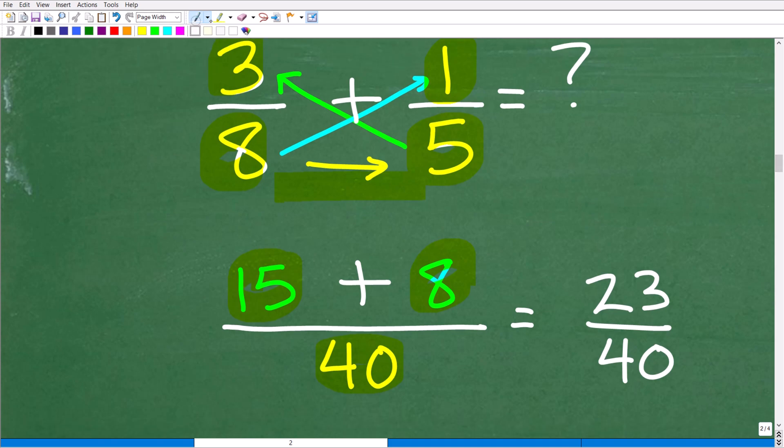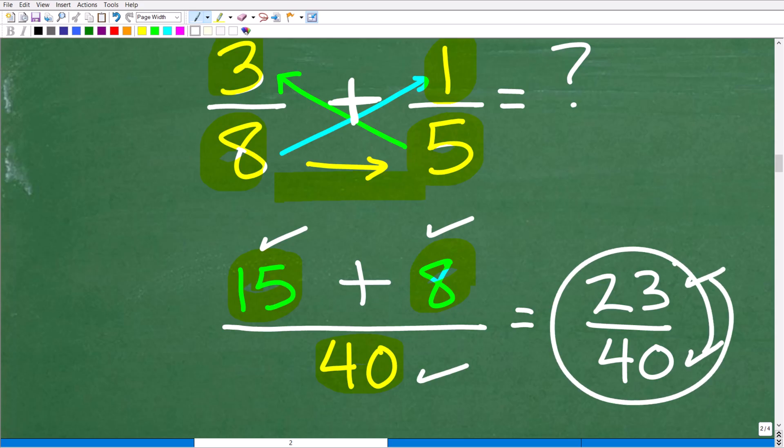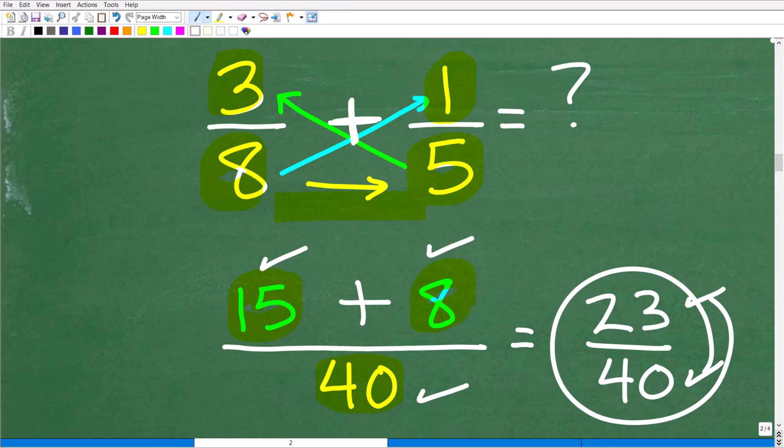You're like, hey, is this the entire method? It is. So now our numerator, 5 times 3 is 15, plus because we're adding, 8 times 1 is 8, all over 8 times 5, which is 40. 15 plus 8 is 23 over 40. We are done. That is an awesome method.